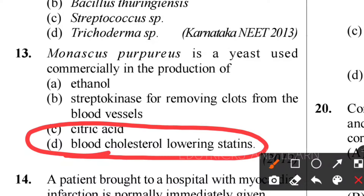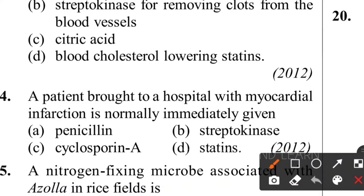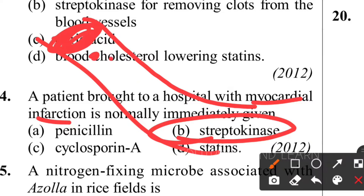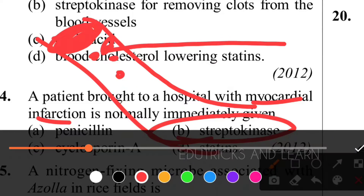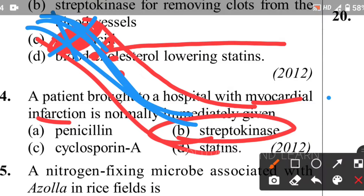Fourteenth question: a patient brought to hospital with myocardial infarction is immediately given what? They want to give streptokinase. Streptokinase is an enzyme obtained from the bacteria Streptococcus, which helps in clearing blood clots. Myocardial infarction means there is a blood clot in the heart muscles with no blood flow. Streptokinase breaks down the blood clot, allowing normal blood flow - this is why streptokinase is used in myocardial infarction.